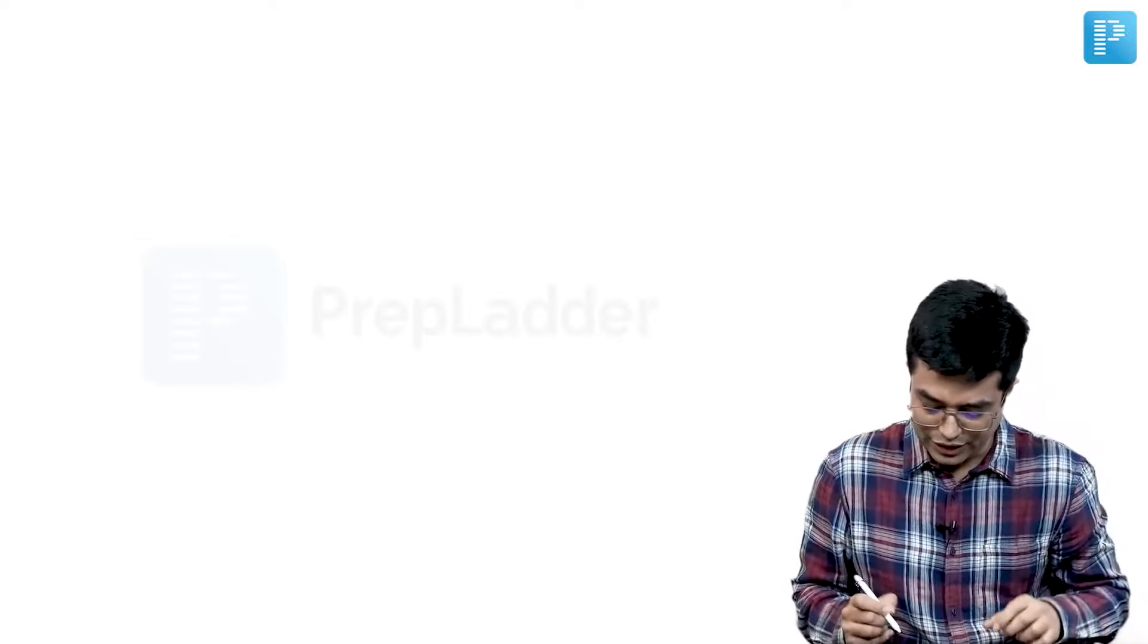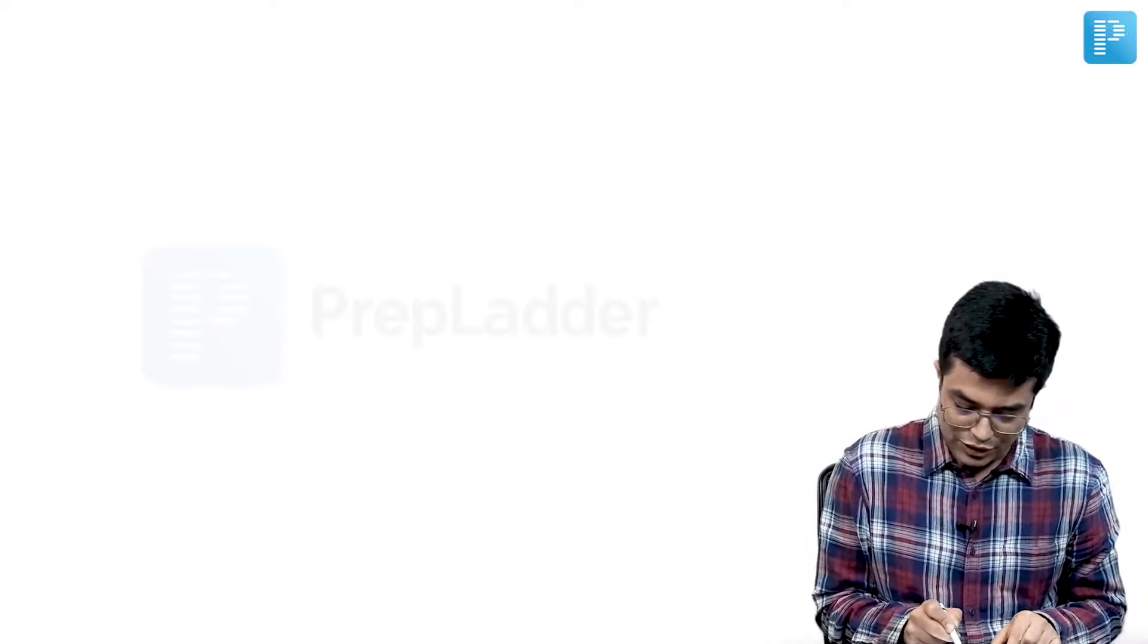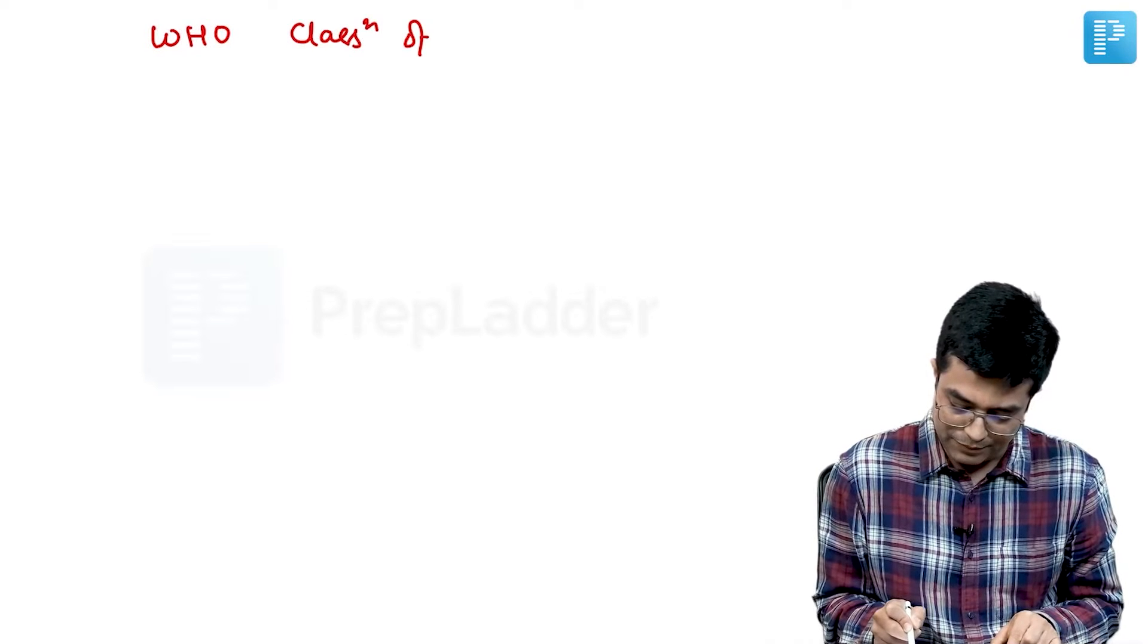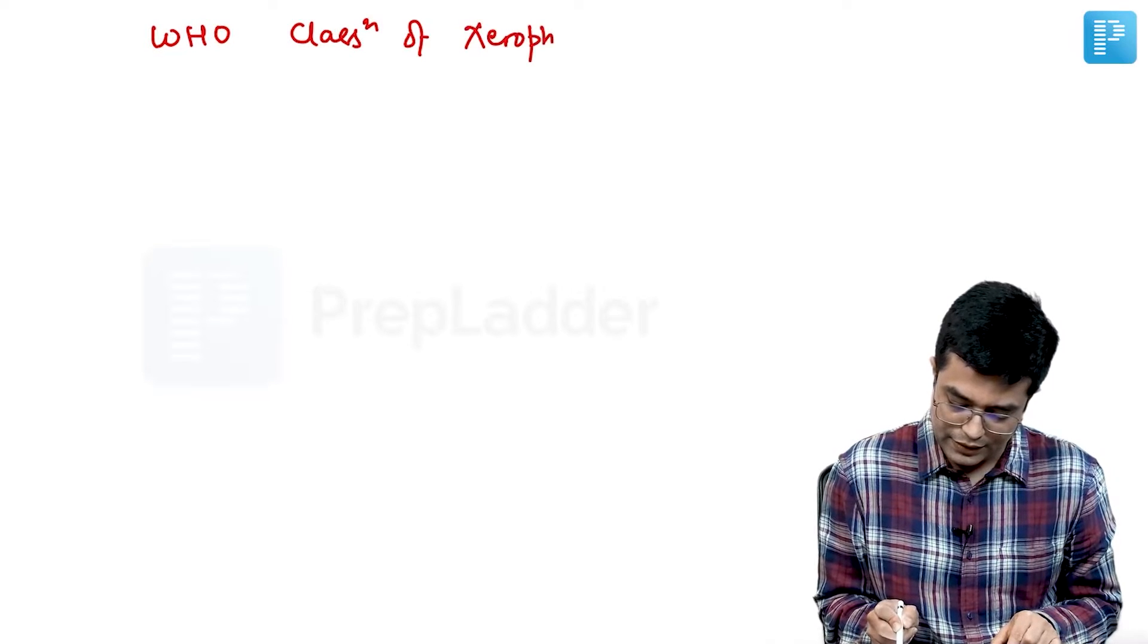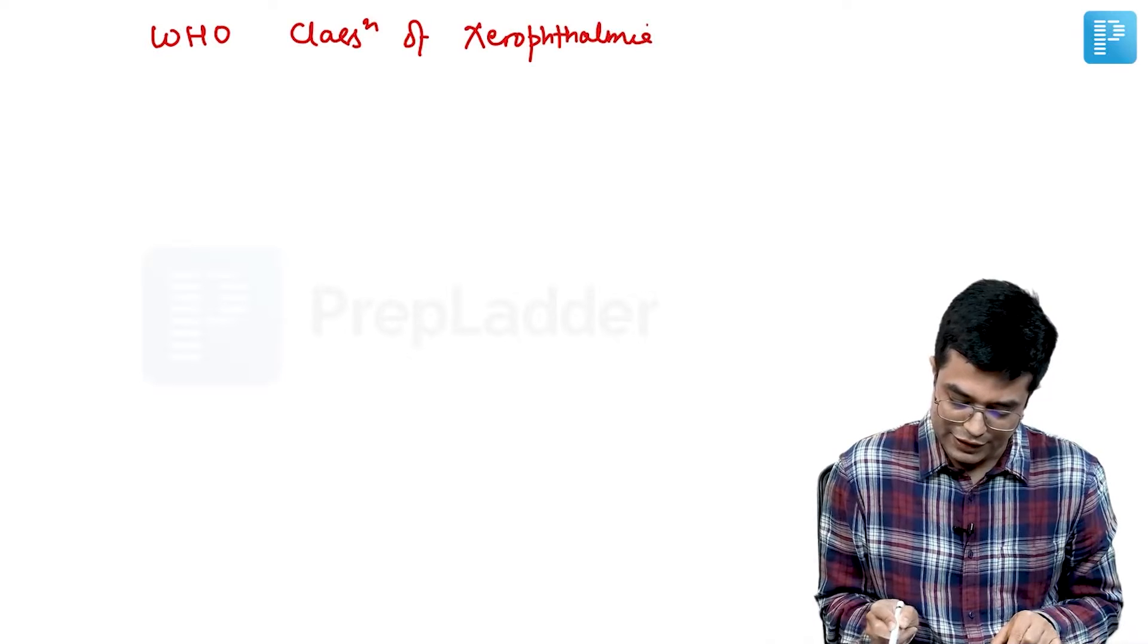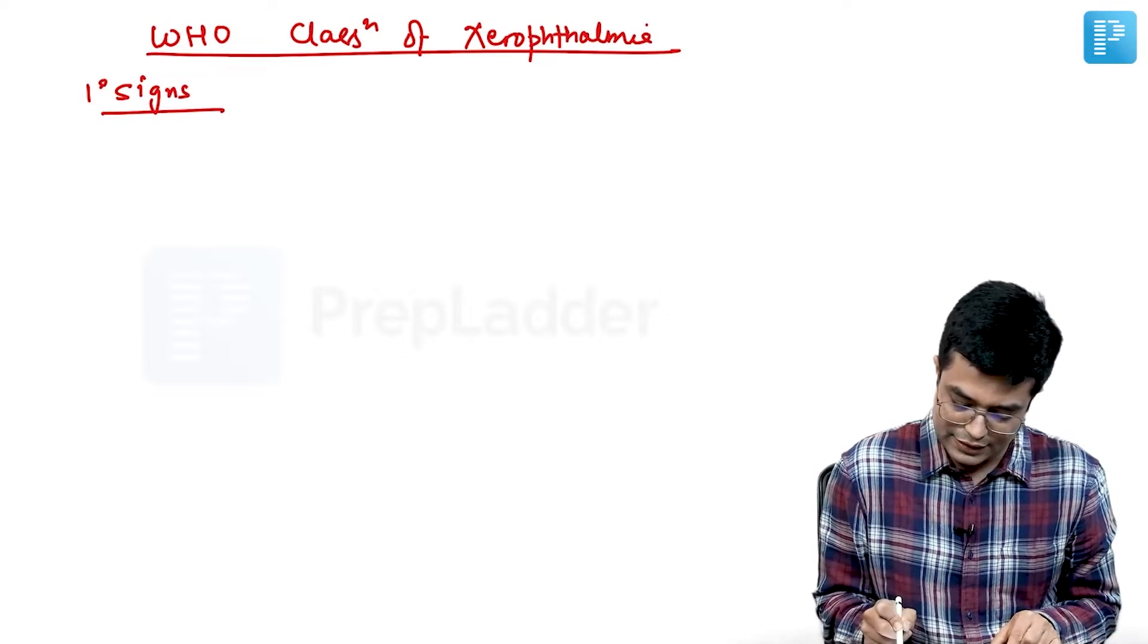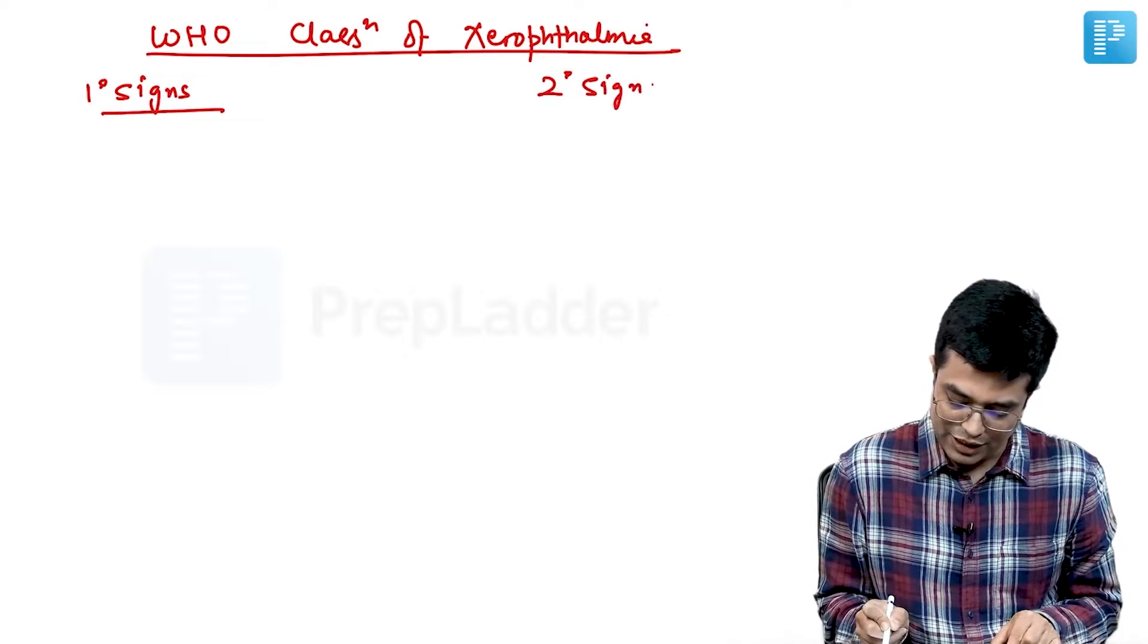So, what are the, let us quickly revise, what are the WHO classification of xerophthalmia? So, we have the primary signs and we have the secondary signs. So, in primary signs, first of all,